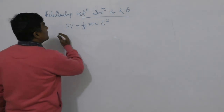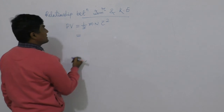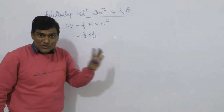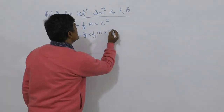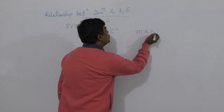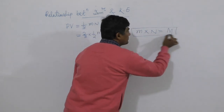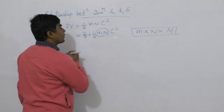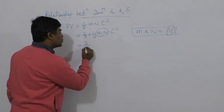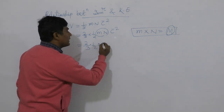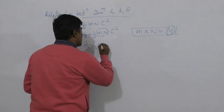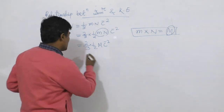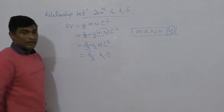So PV is equal to 1 by 3 MNc̄². We write this as 2 by 3 into half MNc̄², where the 2 and 2 cancel leaving 1 by 3. Here, mass of one molecule into Avogadro's number gives molecular mass, so M into N equals capital M. This gives 2 by 3 into half Mc̄², which is nothing but the kinetic energy.